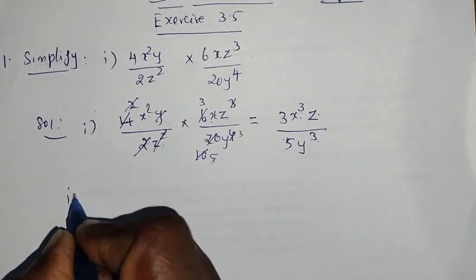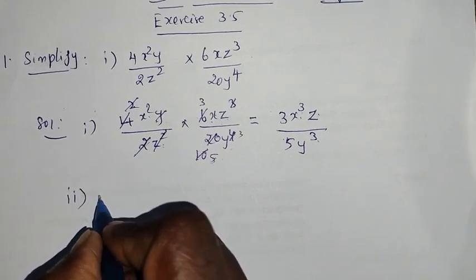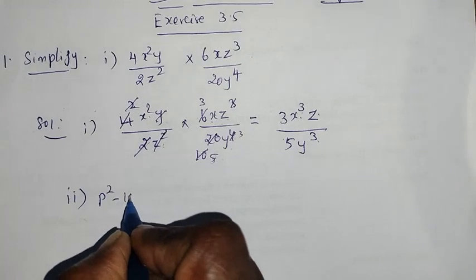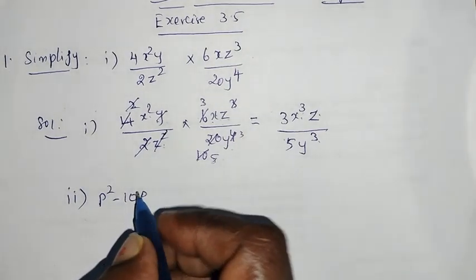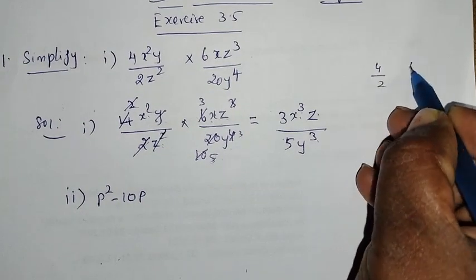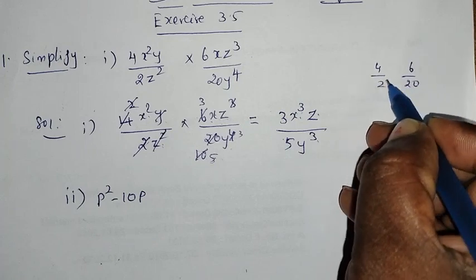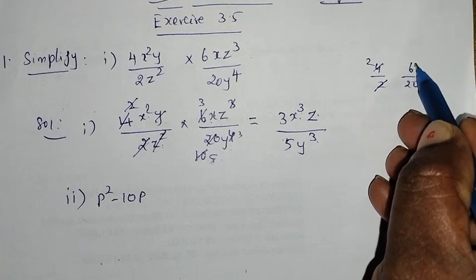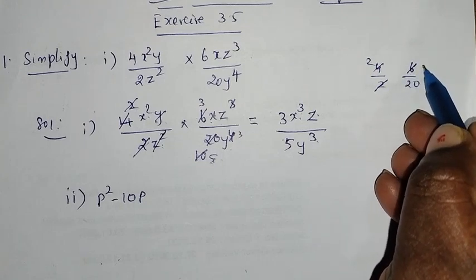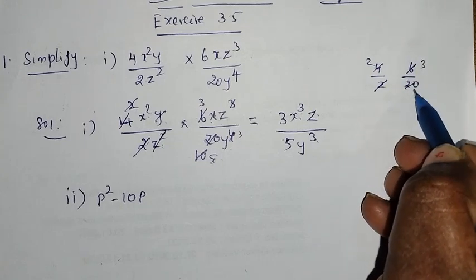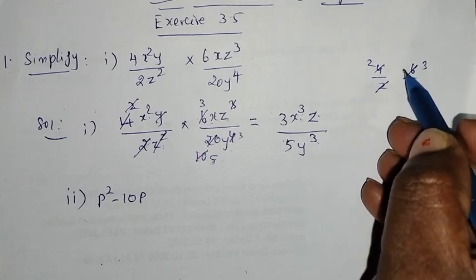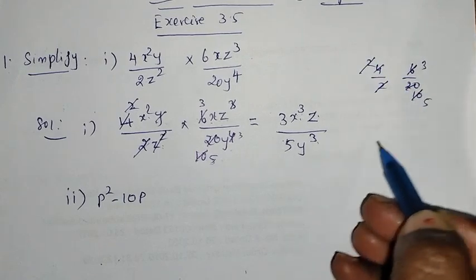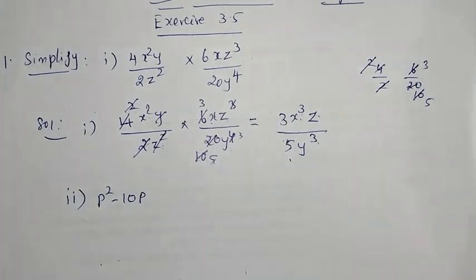Next, second one. P squared minus 10P plus 21, divided by P minus 7. So now 21 is split: 7 times 3 is 21.